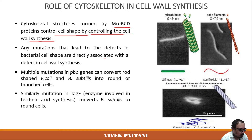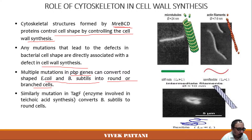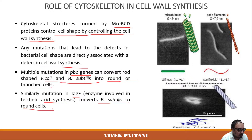If there are mutations — spontaneous or induced — that affect cell wall shape, it can be due to defects in cell wall synthesis. Multiple mutations in PBP genes can convert rod-shaped E. coli and Bacillus subtilis into round or branched cells. Similarly, mutations in the tagF gene, involved in teichoic acid, can convert Bacillus subtilis into round cells.